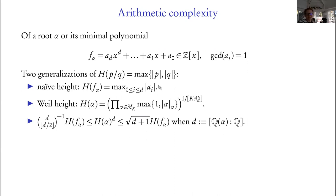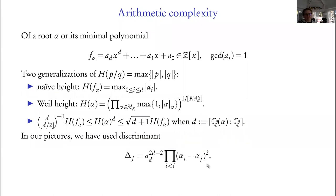There are two classical ways to generalize the notion of height. The naive height takes the max of all the coefficients. Or there's the Weil height — for that you pick a field K containing your algebraic number α, then take the product over the different places for K, normalized by a certain exponent, and you can choose any K containing α. These are essentially equivalent — they tell you the same sort of information — and that can be made precise: if d is the degree of α over Q, you can relate these two notions.